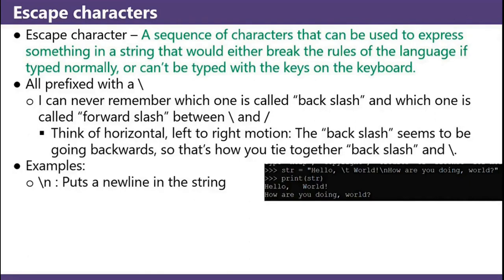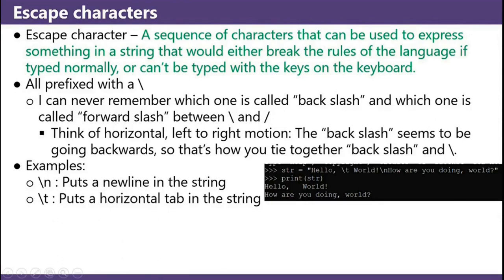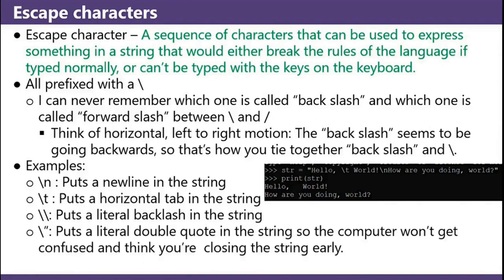Examples: backslash n puts a new line in the string. Backslash t puts a horizontal tab in the string. You can see how both of these work in this example on the side — the backslash t tabs between the 'hello' and the 'world', and the backslash n puts the rest of that string on a new line. Backslash backslash puts a literal backslash in the string. Backslash quote puts a literal double quote in the string so the computer won't get confused and think you're closing the string early.